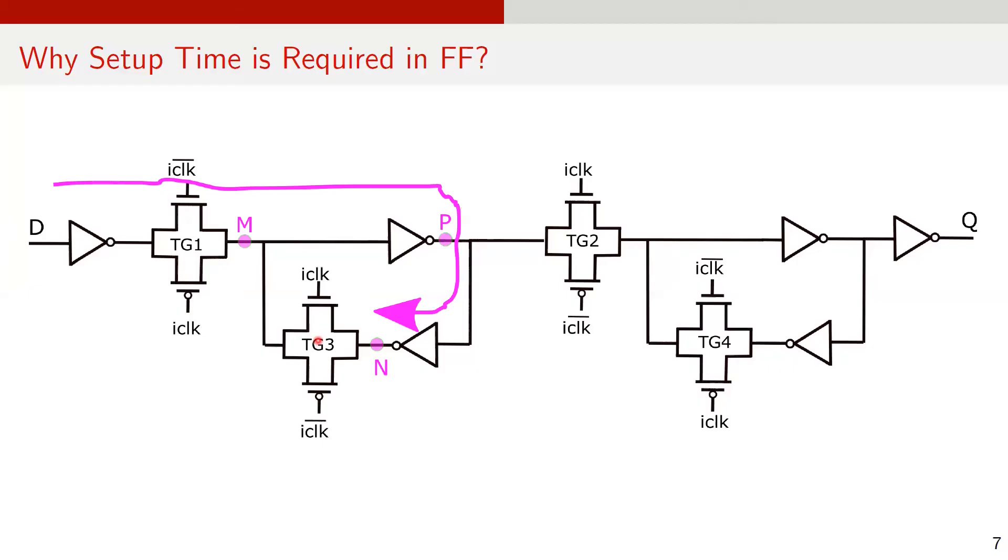Therefore, D must be stable long enough to travel from the input port through three inverters and transmission gate TG1 and reach point N before the clock goes high.